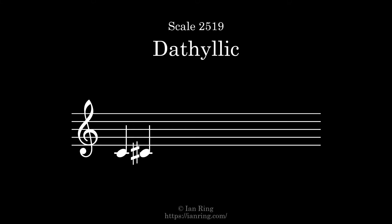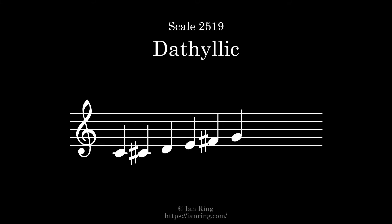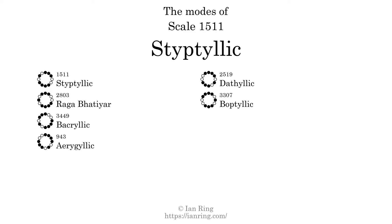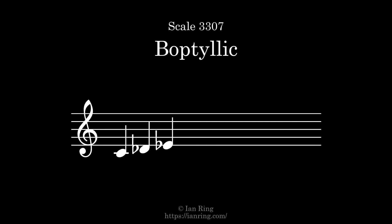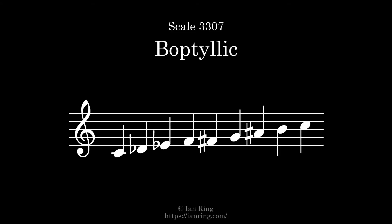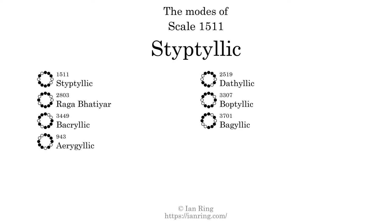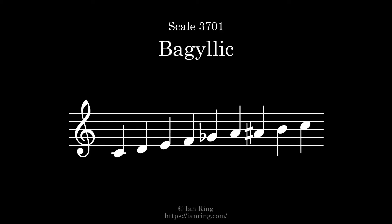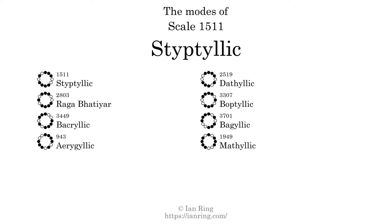The fourth mode, scale 2519, also known as Dethylic, sounds like this. The 6th mode is scale 3307, also known as Bobtilic. The 7th mode is scale 3701, also known as Bojilic. The 8th and last mode is scale 1949, also known as Bobtilic.